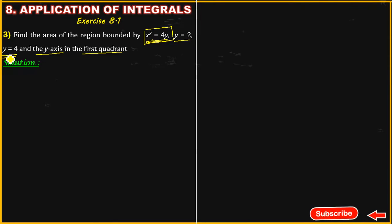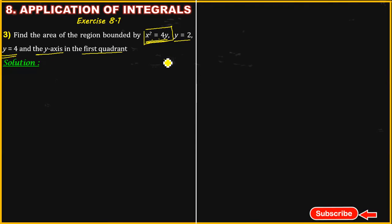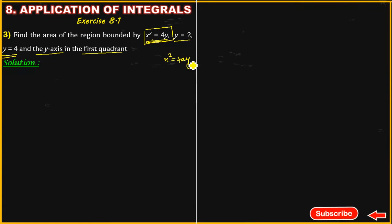The given problem is based on the y-axis. Here, x squared is equal to 4y. That means it is in the form x squared is equal to 4ay, so the curve is open upward.